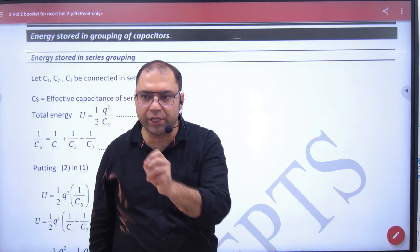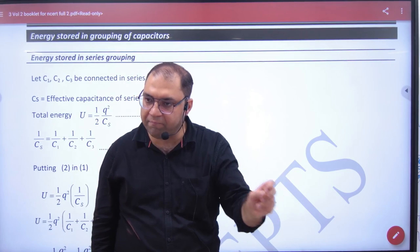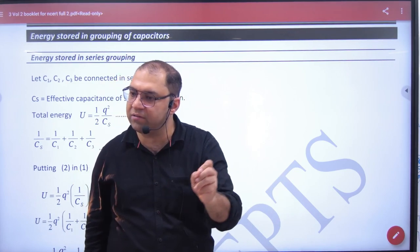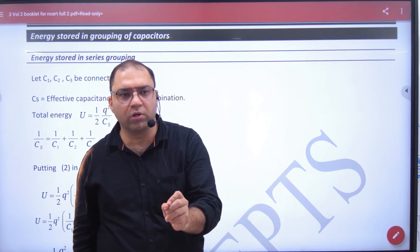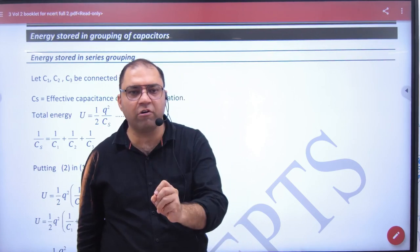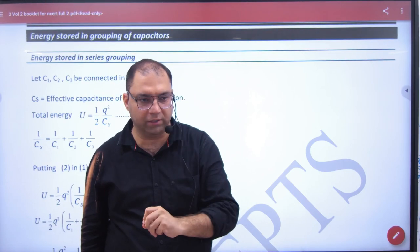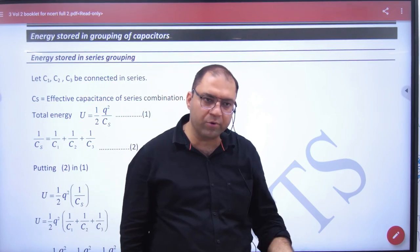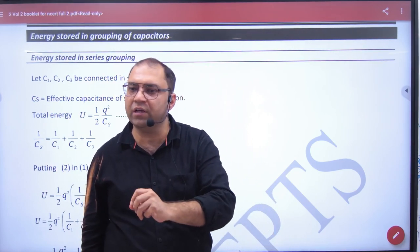In series, Q remains the same. In parallel, V remains the same. So try to do that. When the question is in series, then use energy formula half Q^2 by C. And when the capacitors are parallel, use half CV^2.